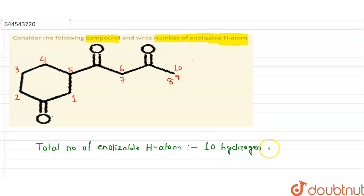10 hydrogen atoms are there which are enolizable in this given particular compound, which is asked in the question. 10 is the correct answer. So I hope you understand the question and the answer. Thank you.